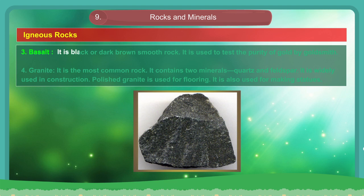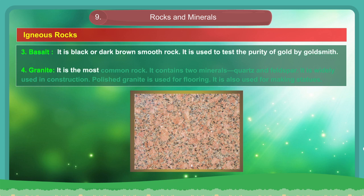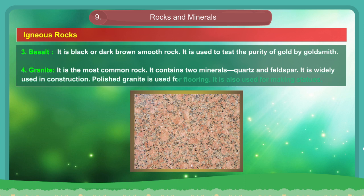3. Basalt. It is a black or dark brown smooth rock. It is used to test the purity of gold by goldsmiths. 4. Granite. It is the most common rock. It contains two minerals, quartz and feldspar. It is widely used in construction. Polished granite is used for flooring. It is used for making statues.